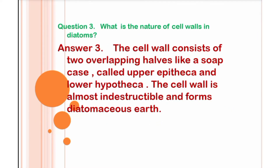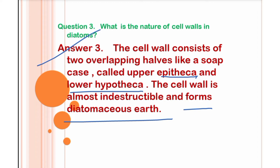Third question: what is the nature of the cell wall in diatoms? The cell wall consists of two overlapping halves, like a soap case — a soap box has an upper half and a lower half. Similarly, the diatom cell wall has two halves: the upper half is called the epitheca and the lower half is called the hypotheca. The cell wall is almost indestructible — it does not break — and that is why it forms diatomaceous earth.